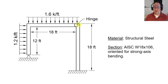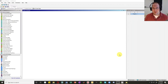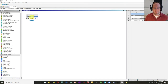We'll have a hinge located at the beam-to-column connection. Our material will be structural steel and we'll be using a standard AISC shape, a W18 by 106 for all the shapes, bent in the strong axis as usual. We'll be starting in the Workbench — let's pull over a geometry and start in SpaceClaim.